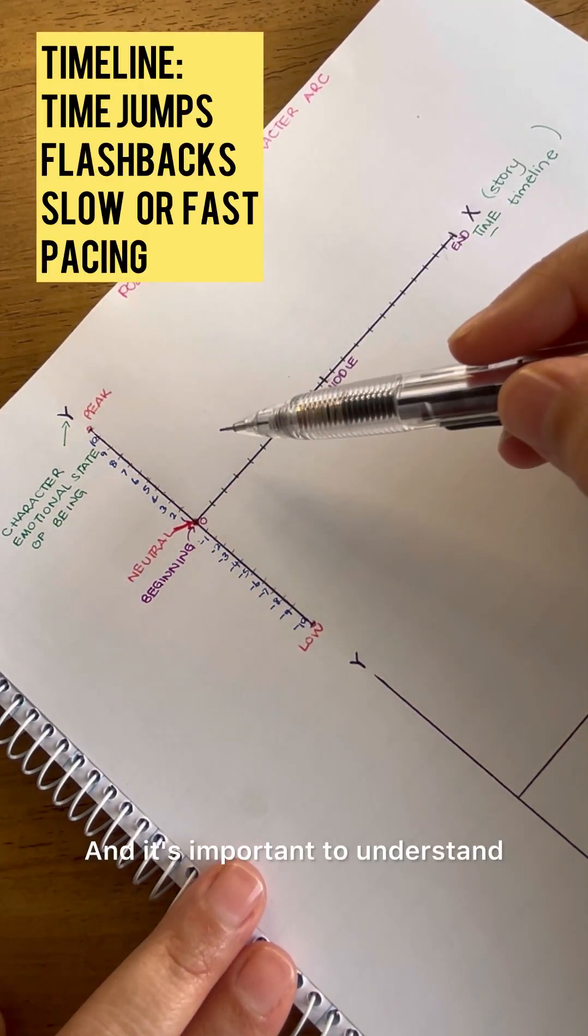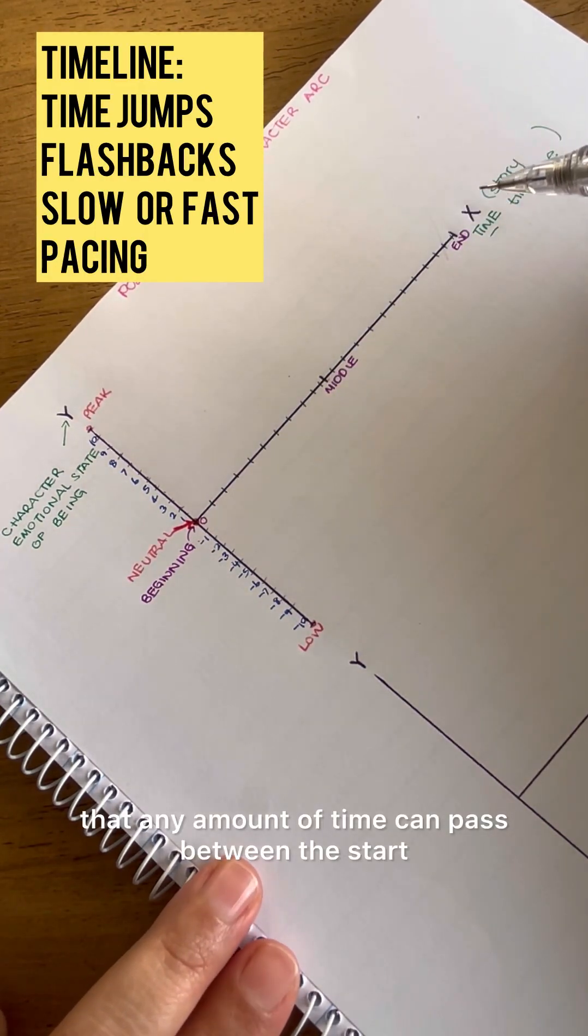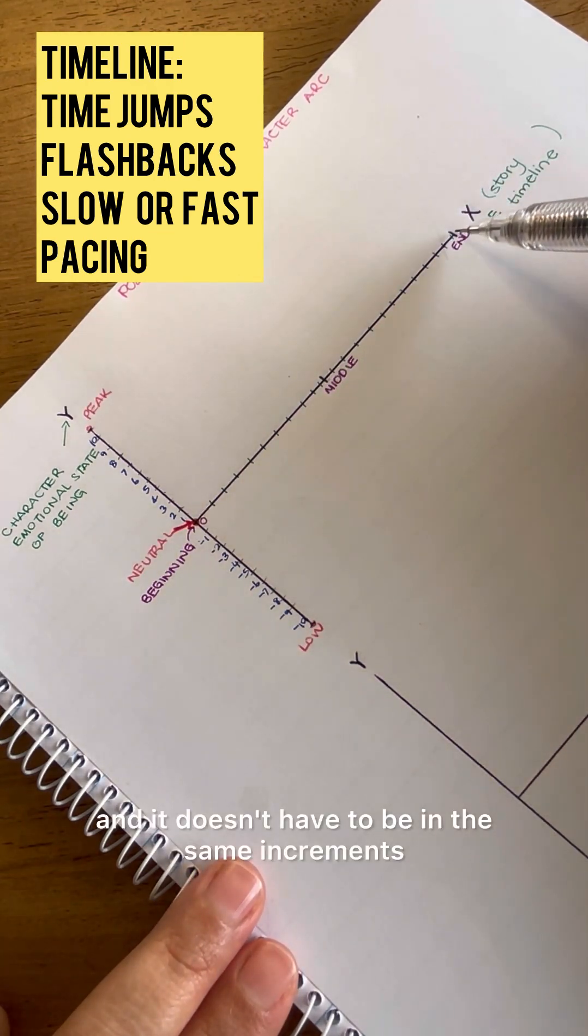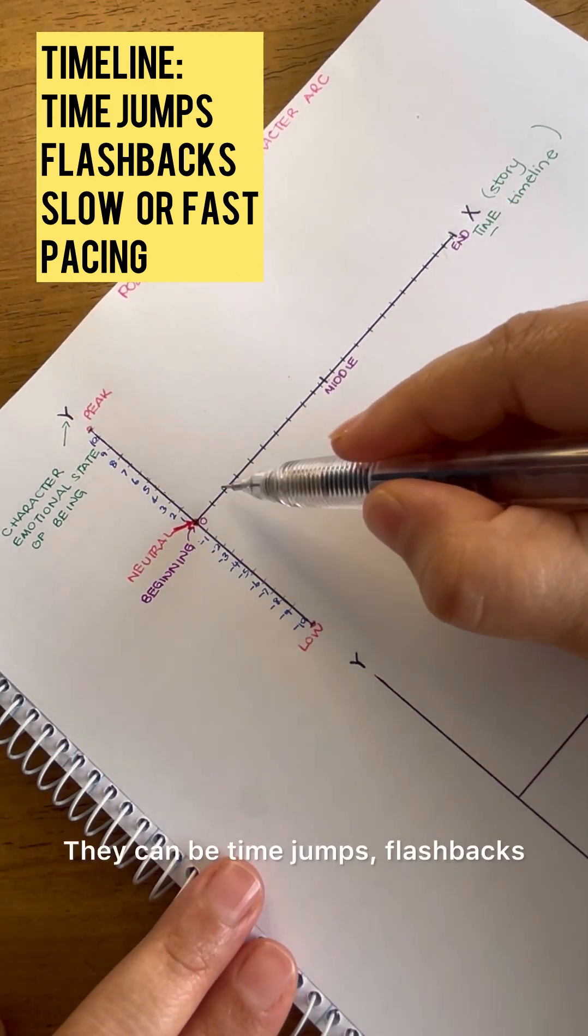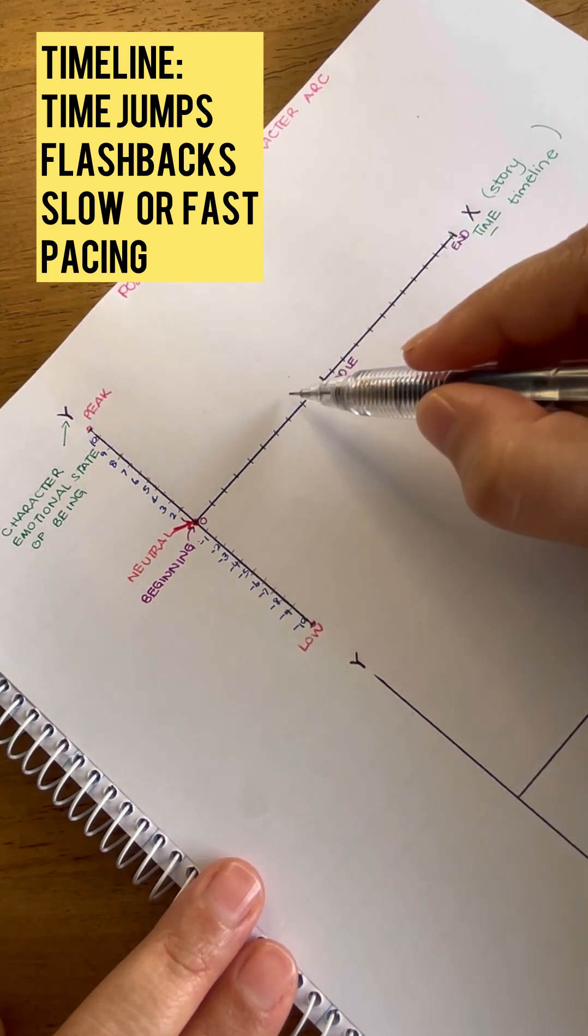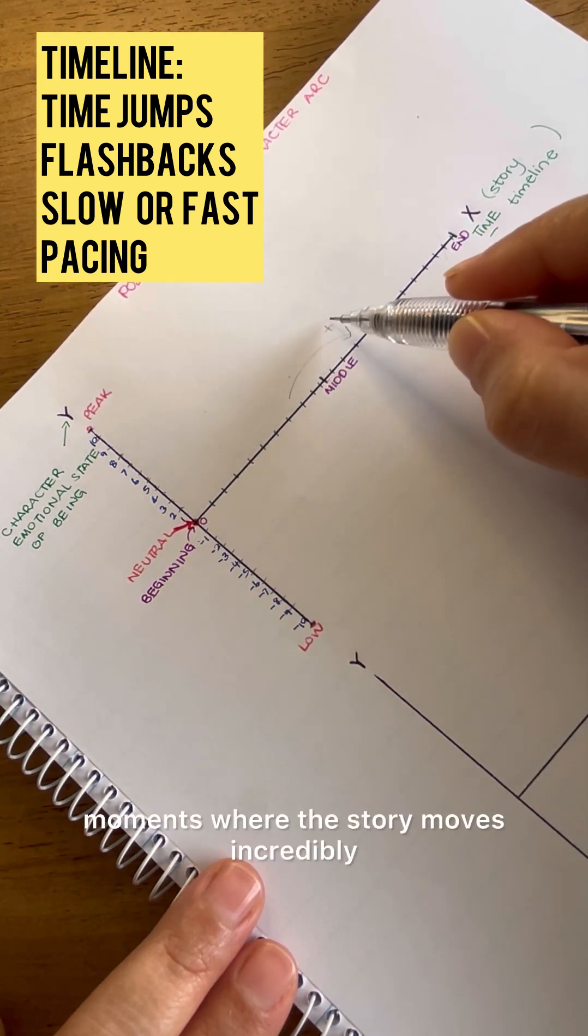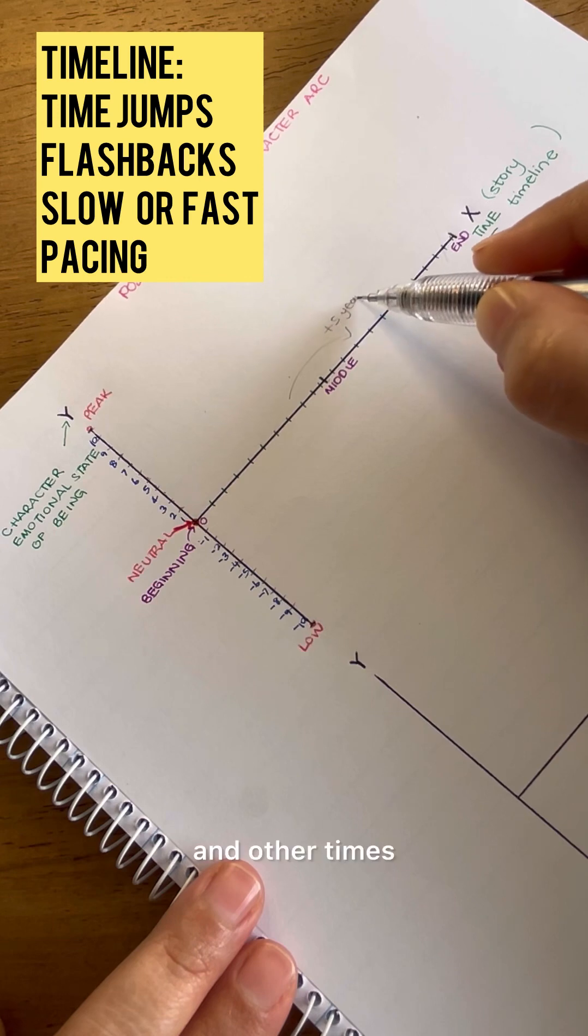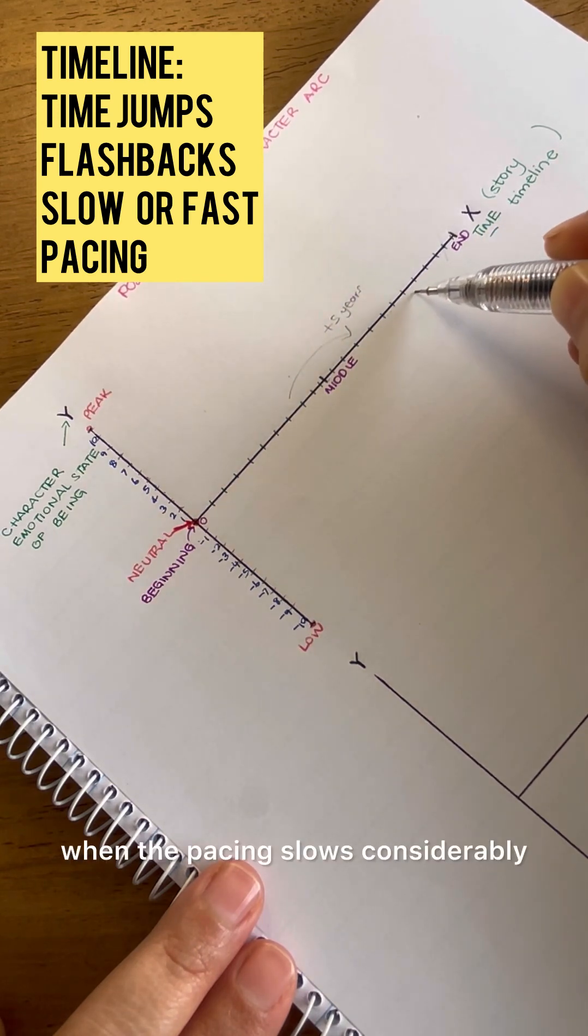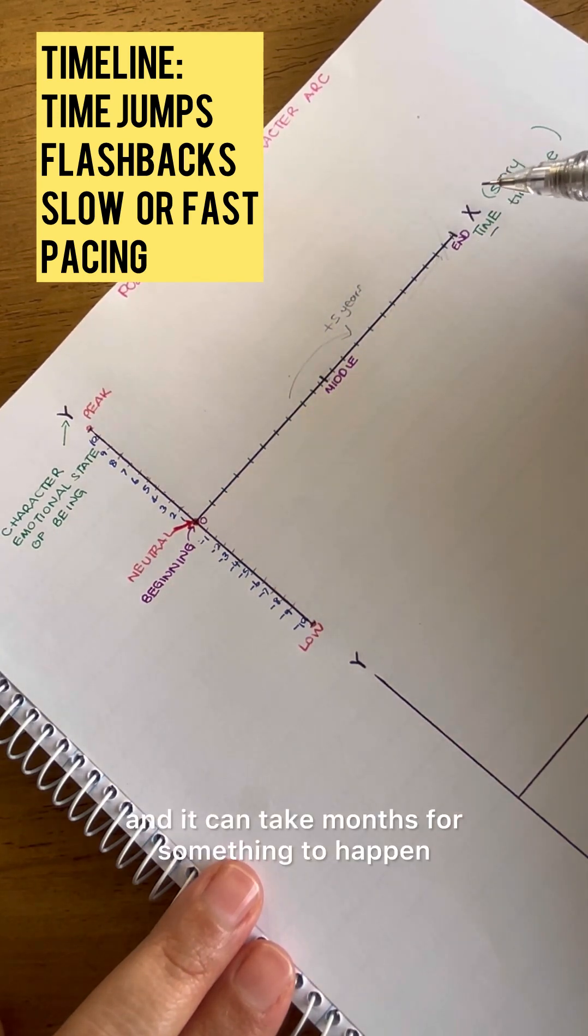And it's important to understand that any amount of time can pass between the start and the end of a story, and it doesn't have to be in the same increments. There can be time jumps, flashbacks, moments where the story moves incredibly fast over a couple of days, and other times when the pacing slows considerably and it can take months for something to happen.